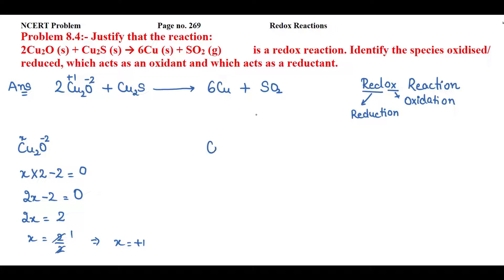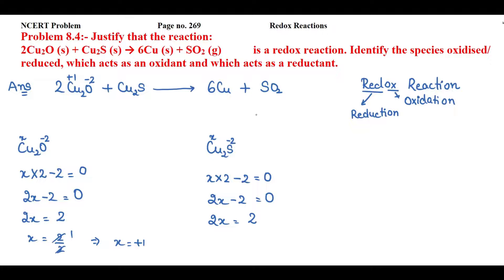Now for copper sulfide (Cu₂S): the electronegativity of sulfur is more than copper, so the oxidation state of sulfur will be −2. Assuming the oxidation state of copper as x: x × 2 + (−2) = 0, so 2x = 2, and x = +1. The oxidation number of sulfur is −2 and the oxidation number of copper is +1.